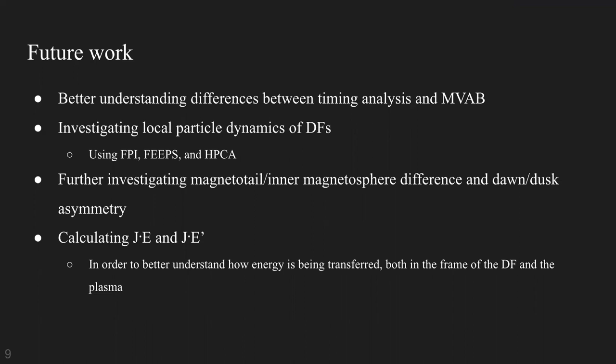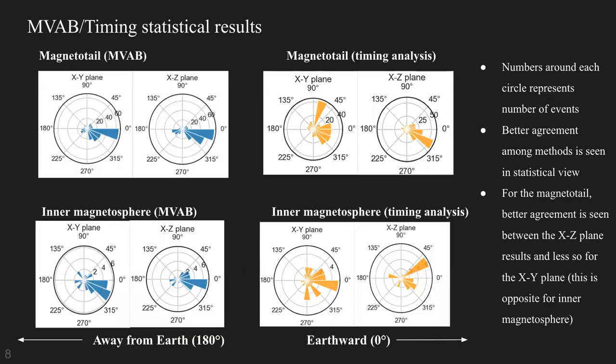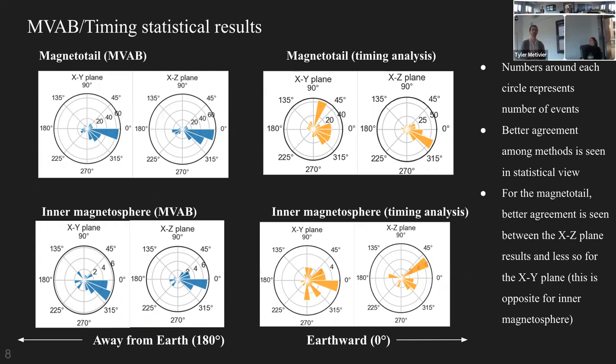Online question from Jason: following up on the systematic vs. random issue — looking at the polar histogram, the differences don't appear random. The distribution is to one side of the hemisphere rather than scattered in any direction, suggesting something systematic. The presenter agreed it's certainly not random but doesn't yet have a good explanation for the subtle differences.